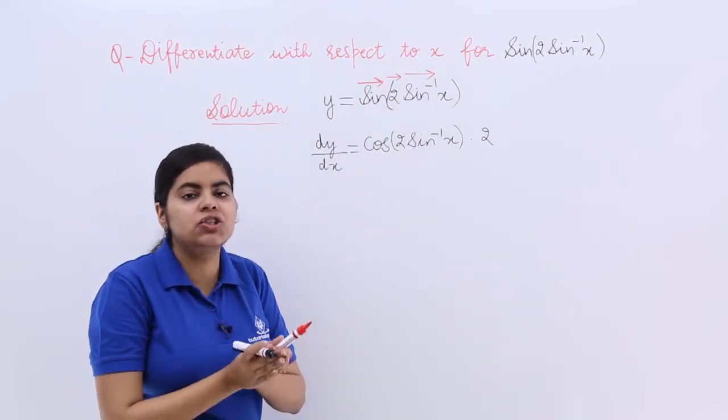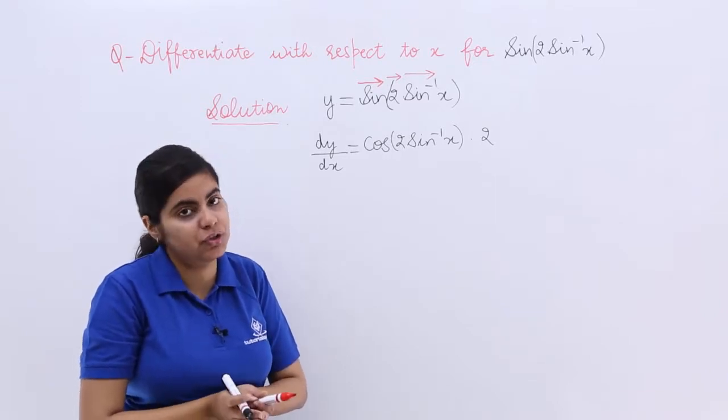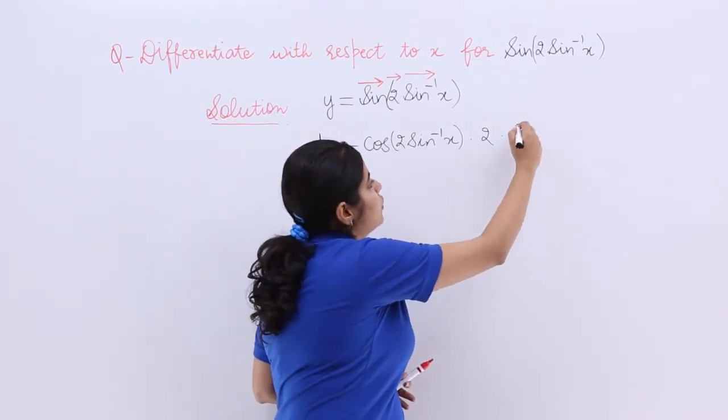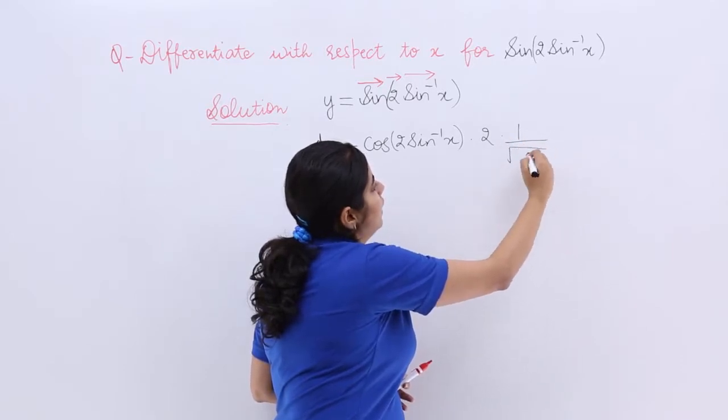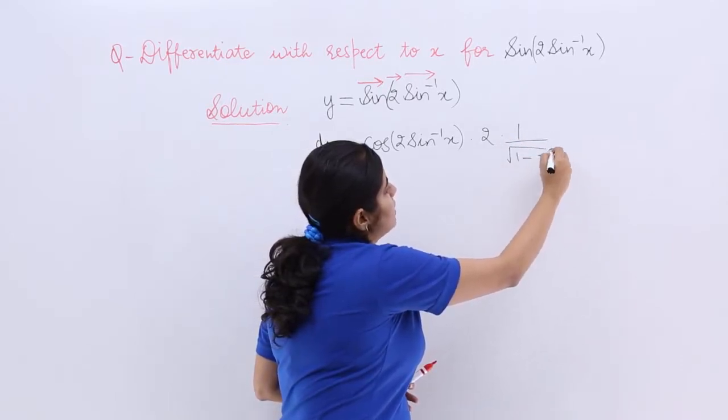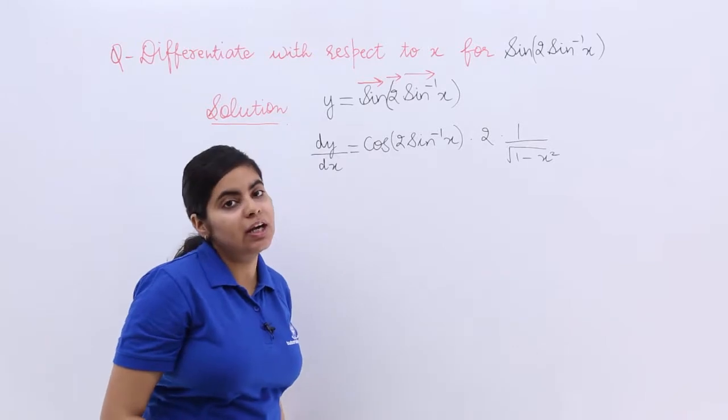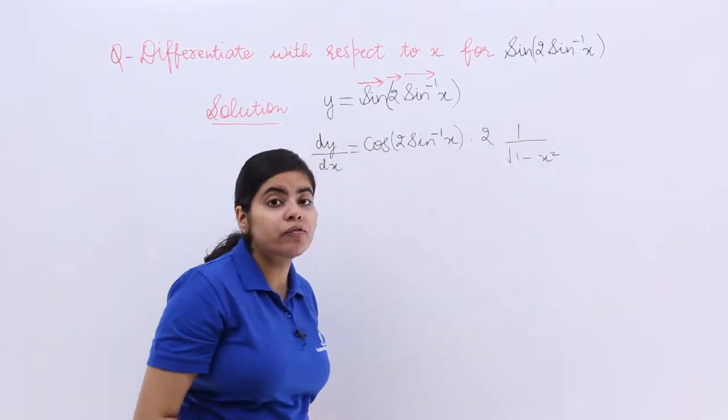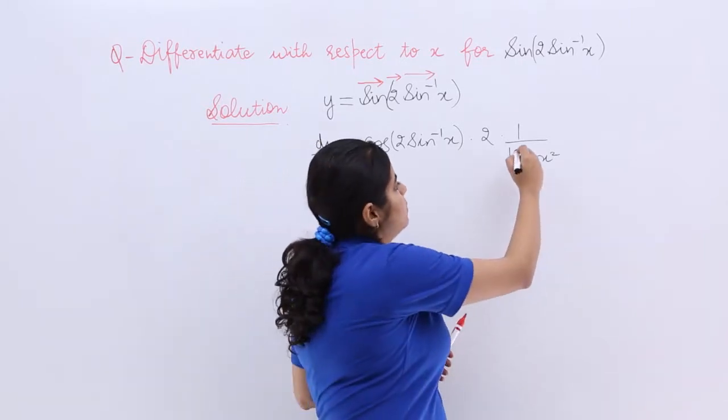Now what is the differentiation of sin inverse x with respect to x? You know the formula, we learnt it in our previous videos. It is 1 upon under root 1 minus x square. 1 upon under root 1 minus x square is the differentiation of sin inverse x with respect to x.